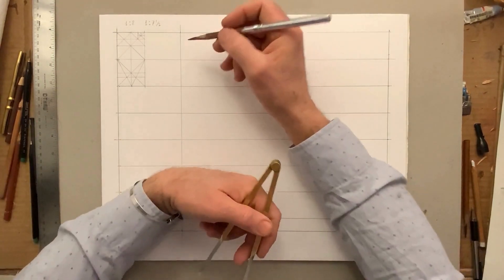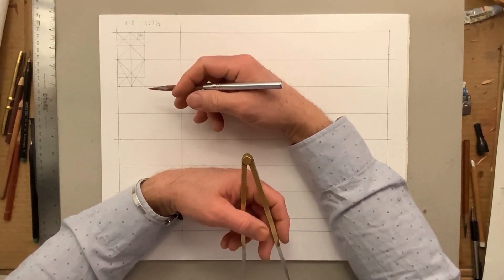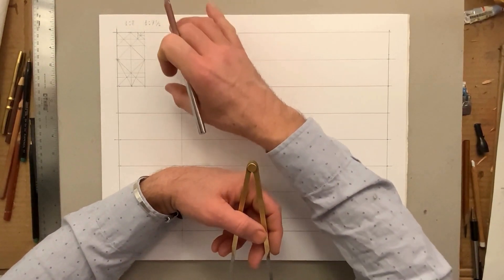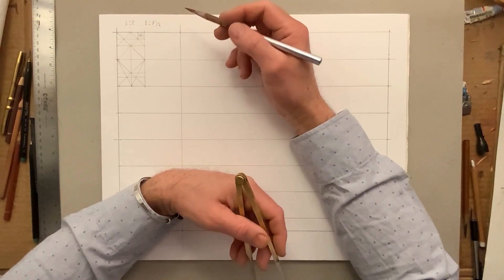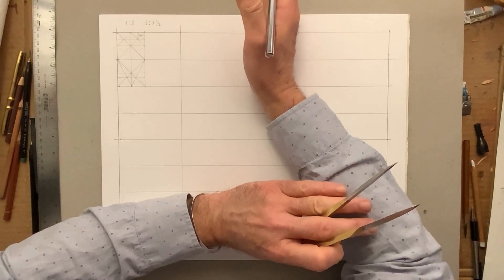What we're going to do now is start blocking in the volume of the stereometric rendering of the figure. The height of the head, of course, is one - we have that established.